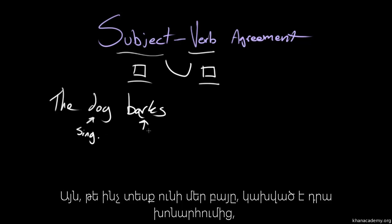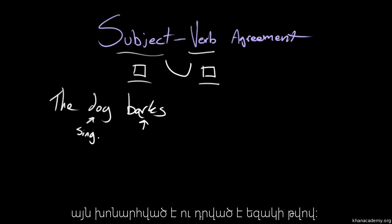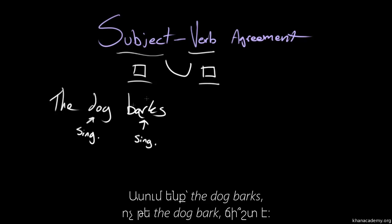And the way this verb is conjugated, the way we've assembled or figured out how the verb is going to be, is also a singular conjugation. So we say the dog barks and not the dog bark.